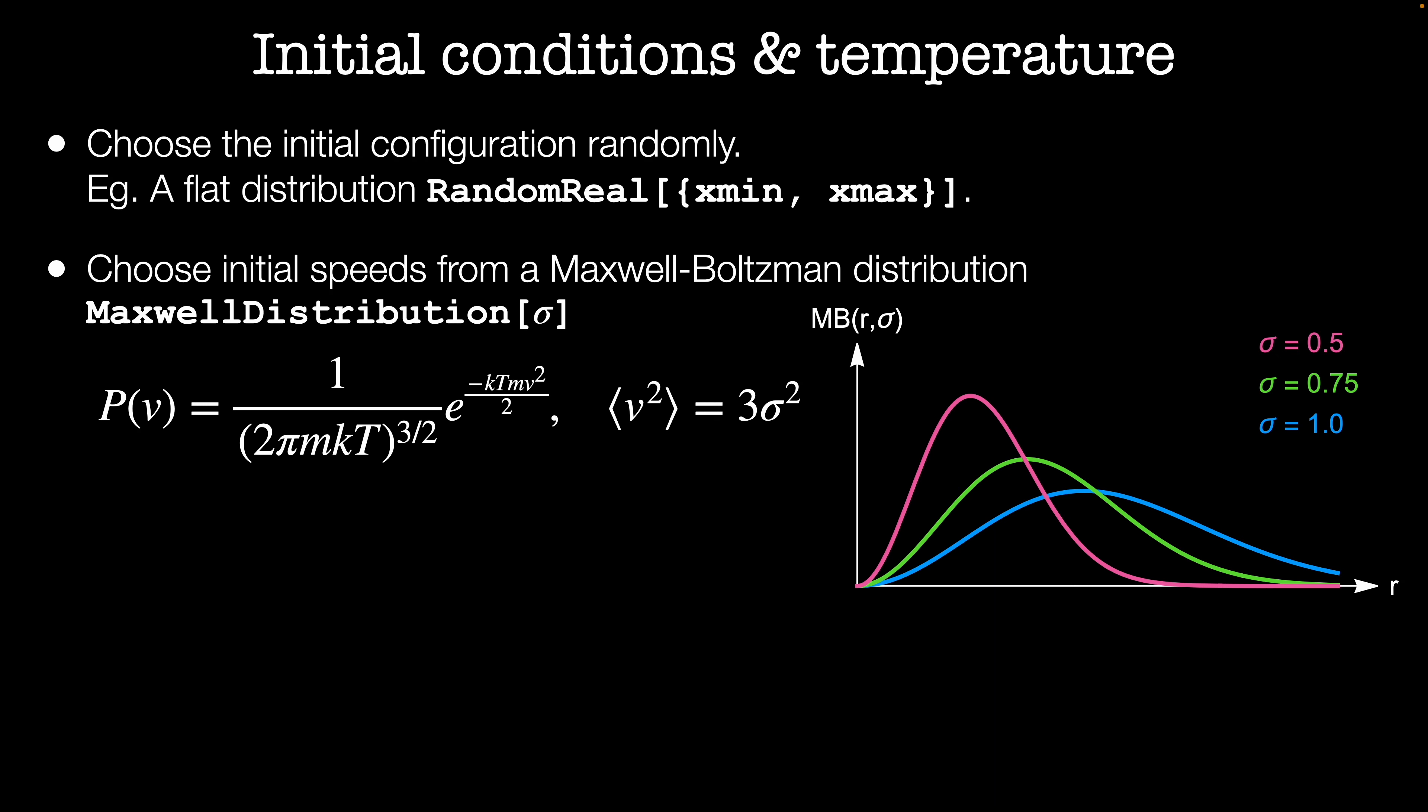The Maxwell-Boltzmann distribution in physics relates the energy scale coming from the temperature, or kT, to the average kinetic energy, or one-half mV squared, of the system. This means that the average temperature in the system is equal to its average kinetic energy. This is called the kinetic theory definition of temperature.